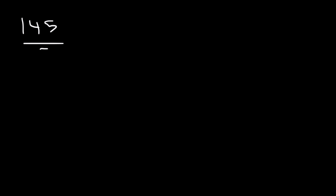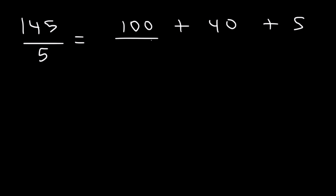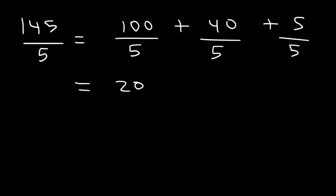Now what about 145 divided by 5? Break it down into 100 plus 40 plus 5 — each is a multiple of 5. 100 divided by 5 is 20, because it takes five $20 bills to make 100. 40 divided by 5 is 8. 5 divided by 5 is 1. So the total is 29.